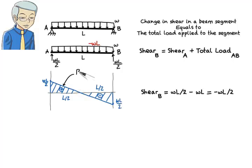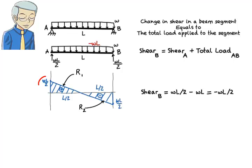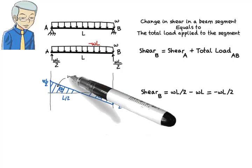Let's label the positive region R1 and the negative region R2. We are now in a position to draw the moment diagram using the constructed shear diagram. To do so, we need to calculate the area under the shear diagram. Since the diagram consists of two regions, we need to calculate two areas: a positive area associated with R1 and a negative area associated with R2. R1 forms a right triangle with a height of WL over 2 and a base of L over 2. Therefore, its area is WL squared over 8.